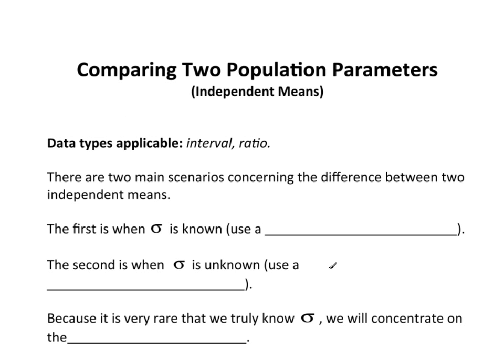So now that we've looked at the variances, let's take a look at two population parameters. Specifically, we're going to look at the means, comparing two different independent means. The data types applicable are interval and ratio. If you have nominal or ordinal data, this does not make any sense whatsoever.